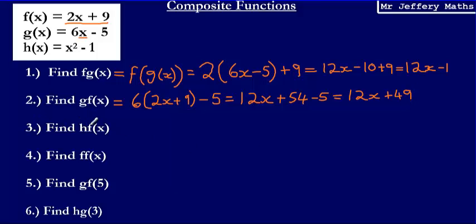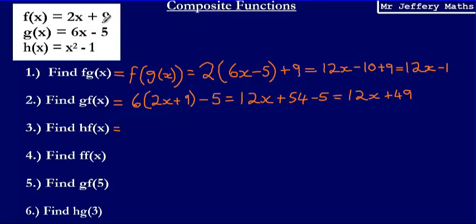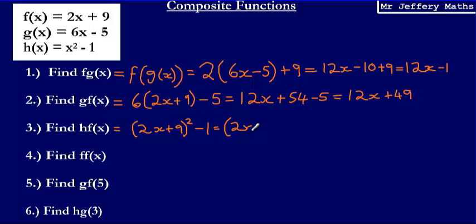Question 3: we're asked to find h of f of x. So we're substituting f(x) into h(x). This is a bit trickier because we're substituting 2x plus 9 into x squared minus 1. So we're going to be squaring 2x plus 9 — that gives us (2x plus 9) squared minus 1. Now we need to be careful: (2x plus 9) all squared is the same as (2x plus 9)(2x plus 9) minus 1.